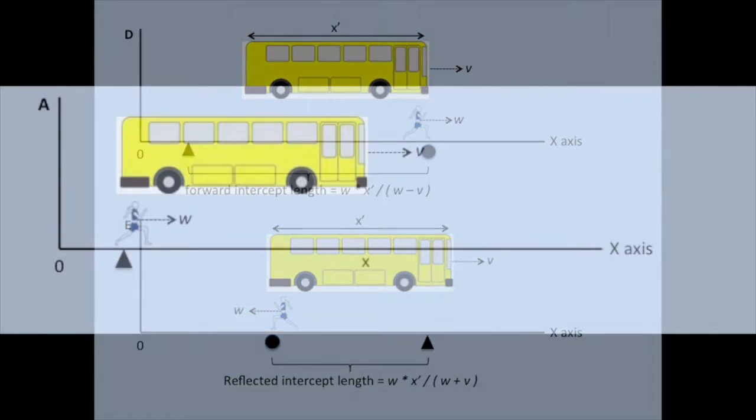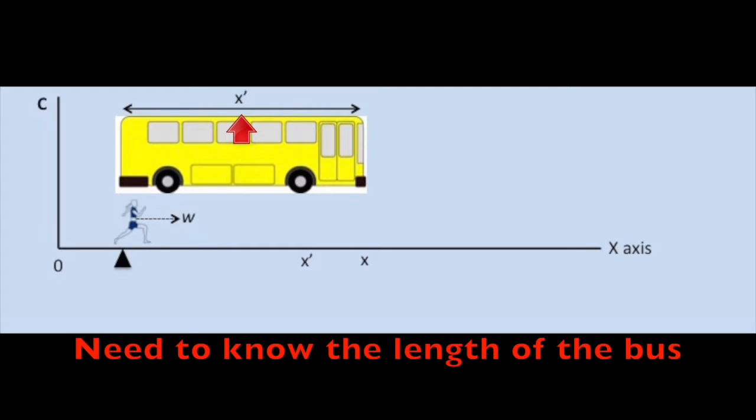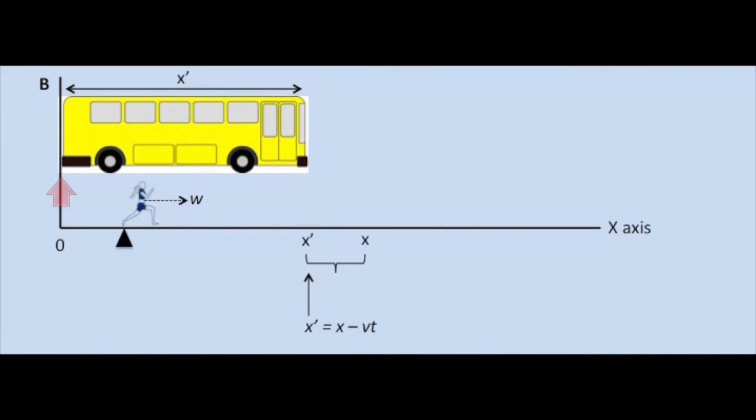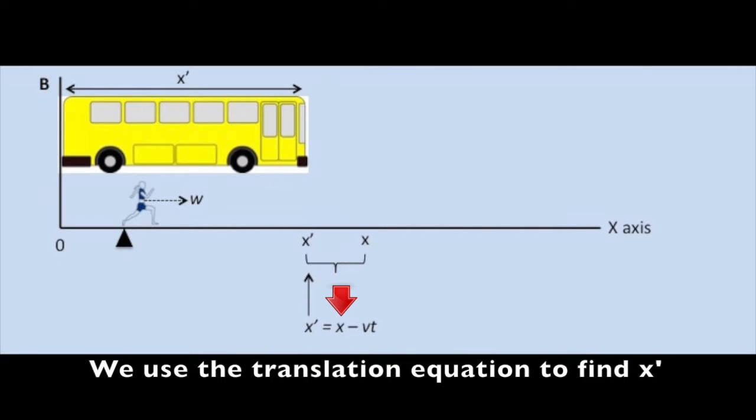Well, almost. There's only one problem. We don't know the length of the bus. But don't worry. We know how to find it. If we make one key assumption, which is that when time is zero, the back of the bus is at the origin.